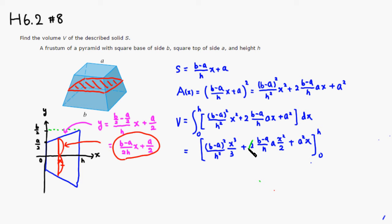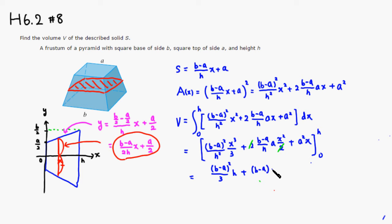We can cancel the 2 on top and bottom in the middle term. Plugging in H: we have H³ and H², so H² cancels out in those terms. You get (B - A)²/3 · H, plus (B - A)·A · H, plus A²·H. Plugging in 0 gives all zeros. Everyone has H, so I'll pull H out.